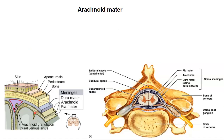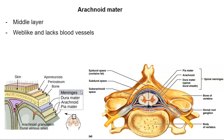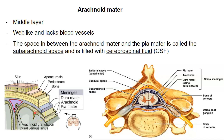Then we have the arachnoid mater — that's the middle layer. It's web-like and it lacks blood vessels. You can see it's web-like here in this cartoon, and in this drawing you can see the web-like structures. The brain is sort of suspended from those arachnoid fibers. The space between the arachnoid mater and the pia mater is called the subarachnoid space, and it's filled with cerebrospinal fluid, or spinal fluid for short.